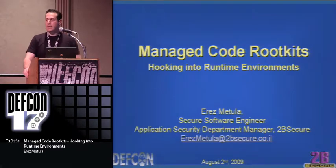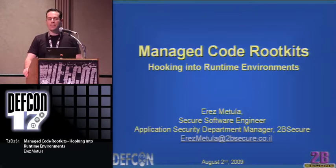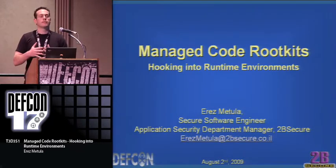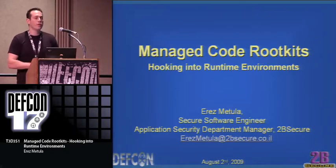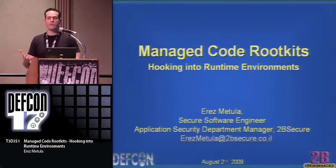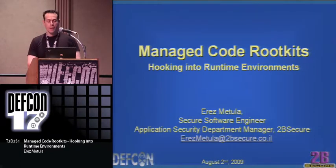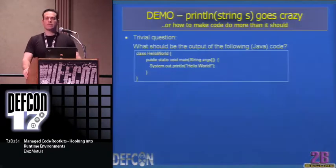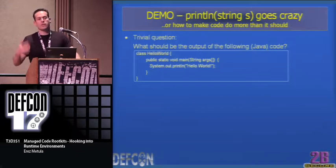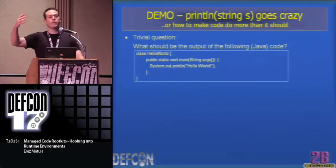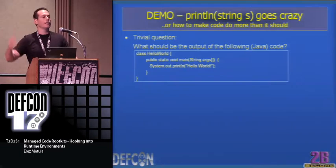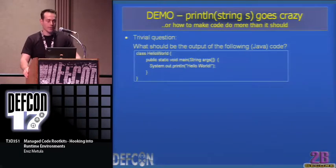The reason for that is that the internal implementation of the managed code was modified. What the application-level code says is not necessarily what it's going to do. This is a problem when we're doing code reviews — the malicious code might not be at the application level. But this was just a simple example of language modification.